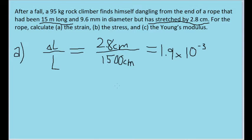I've put those values into the formula, and it's worth noting that I converted from 15 meters into 1500 centimeters to make our units consistent. And plugging this into our calculator, we find a strain of 1.9 times 10 to the negative 3. There is no unit as the units cancel out.